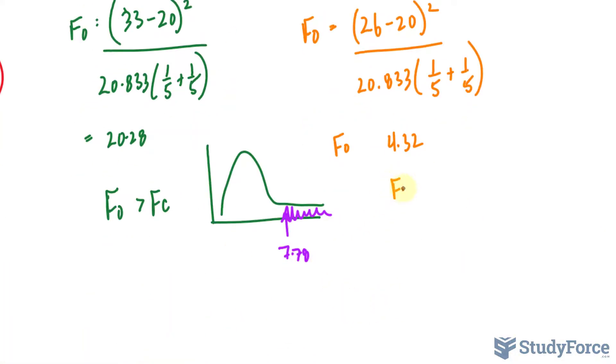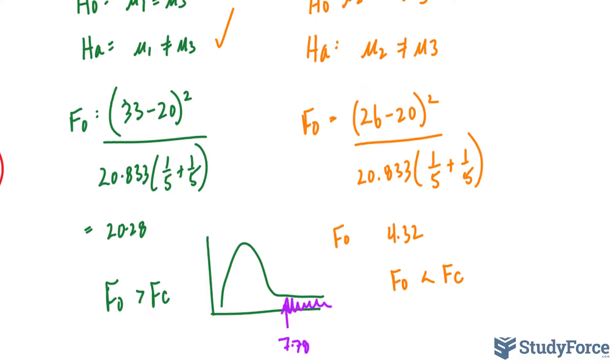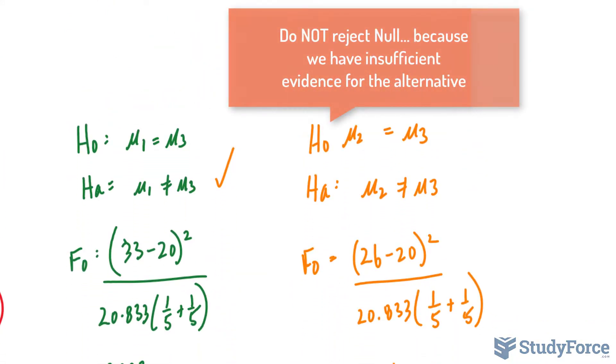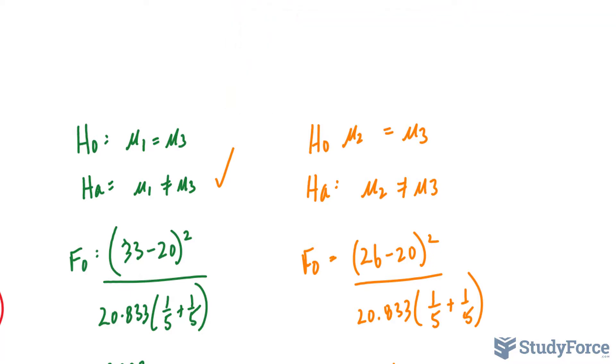The F observed is less than F critical, so it doesn't fall in the rejection region. If it doesn't fall in the rejection region, then we have insufficient evidence at 0.05 significance level to conclude that their averages are different. So do not reject the null hypothesis.